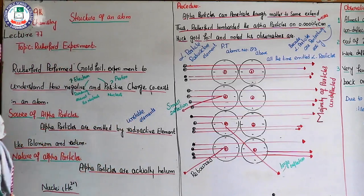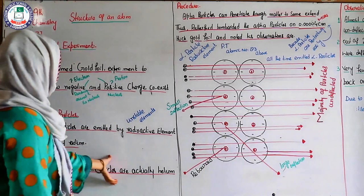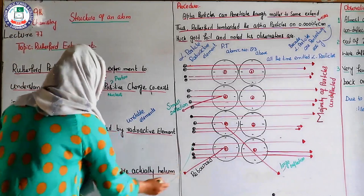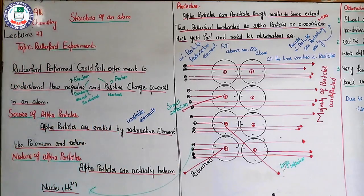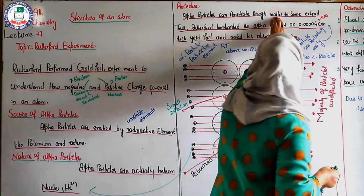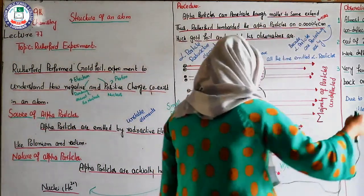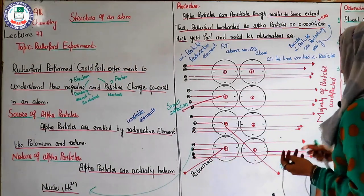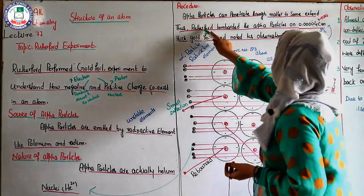Polonium and radium are radioactive elements, which we can say are unstable elements that emit alpha particles. The nature of alpha particles is that they are actually the helium nuclei — basically the nuclei of helium. You should write these three parts in your book in paragraph form for extra knowledge. Now, regarding procedure: alpha particles can penetrate matter to some extent.